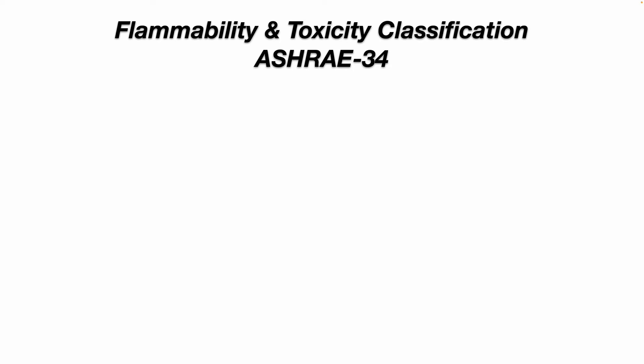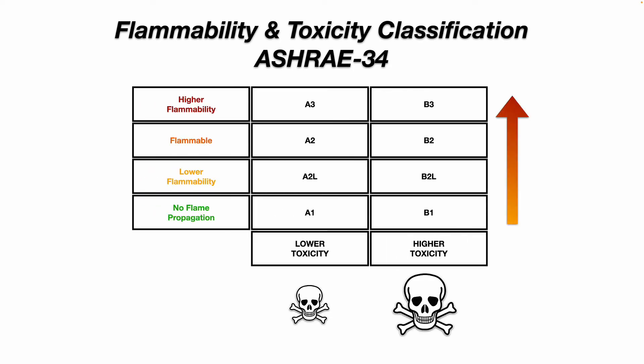Flammability and toxicity classification per ASHRAE 34 is another important chart to memorize. A1 refrigerants have no flame propagation. A2L refrigerants have lower flammability. A2 refrigerants are flammable. A3 refrigerants are highly flammable. B refrigerants have higher toxicity — think of it as A is okay, B is bad. A B3 refrigerant is both highly toxic and highly flammable. The higher the number, the higher the flammability. A is for lower toxicity; B is for higher toxicity.